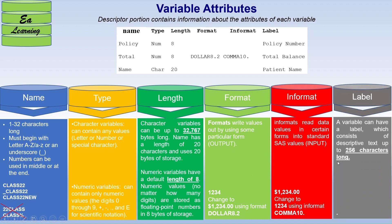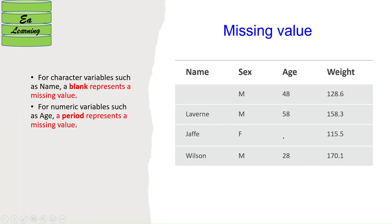The sixth attribute is label, which is descriptive text associated with a particular variable. Labels can be up to 256 characters long. The variable attributes — name, type, length, format, informat, and label — are critical to keep in mind while using SAS programming.